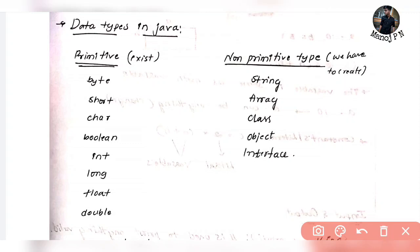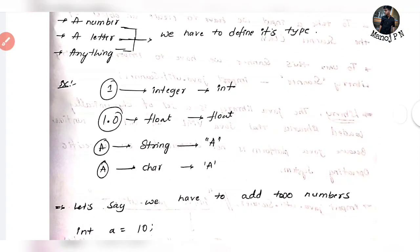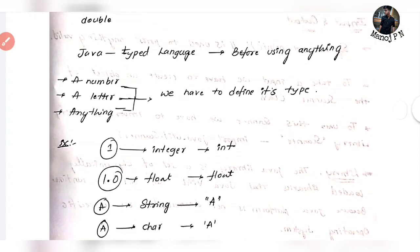So in Java, before using anything, we have to specify the type of data that we are using. For example, a number or a letter - you have to specify what type it is.